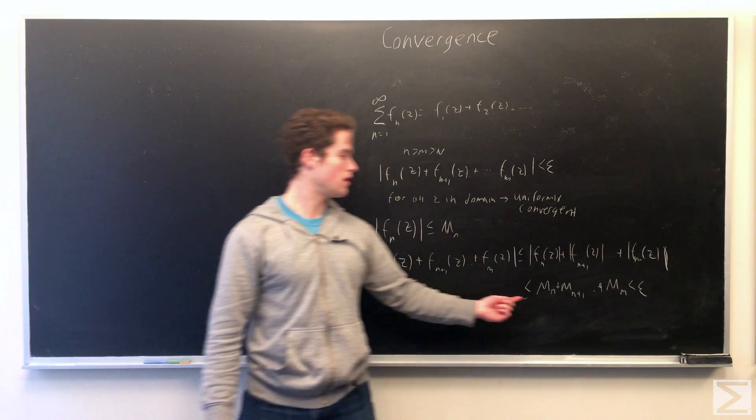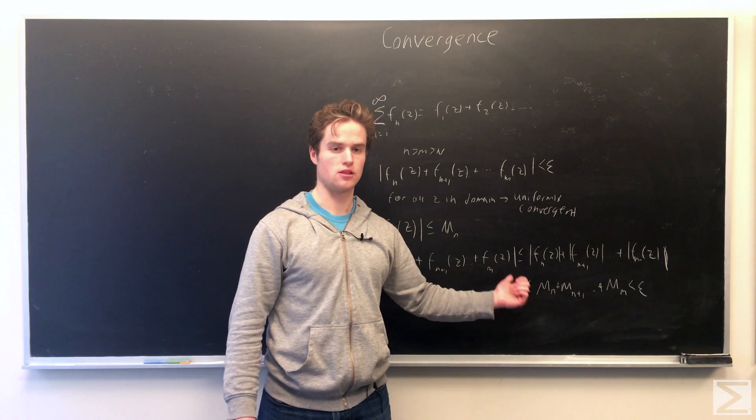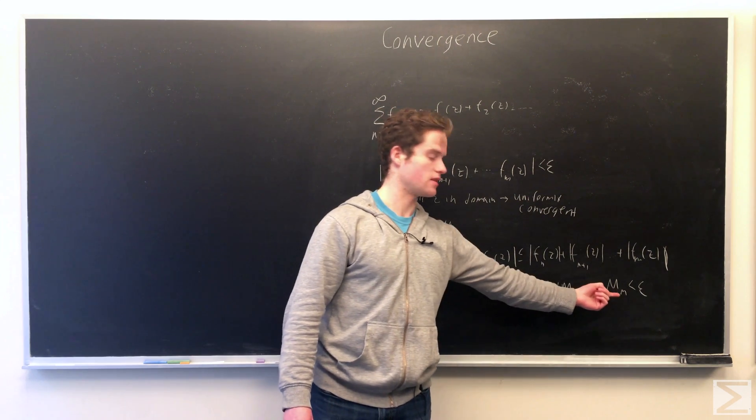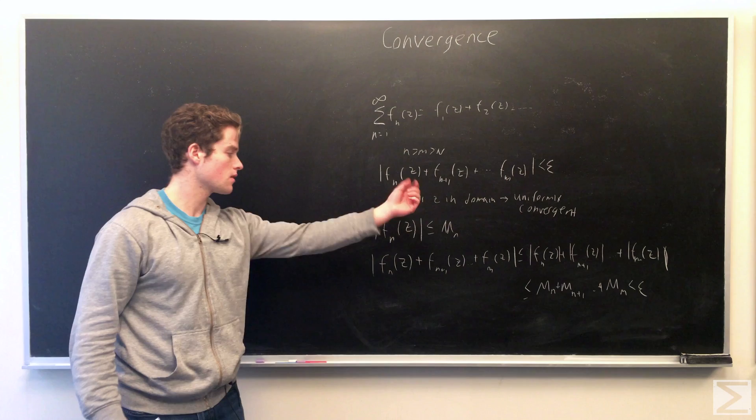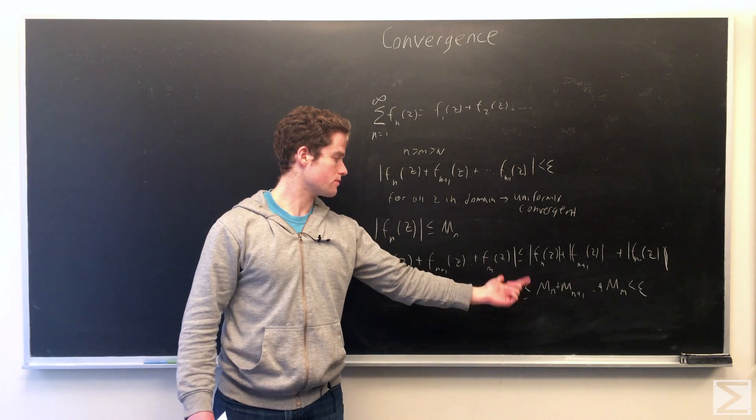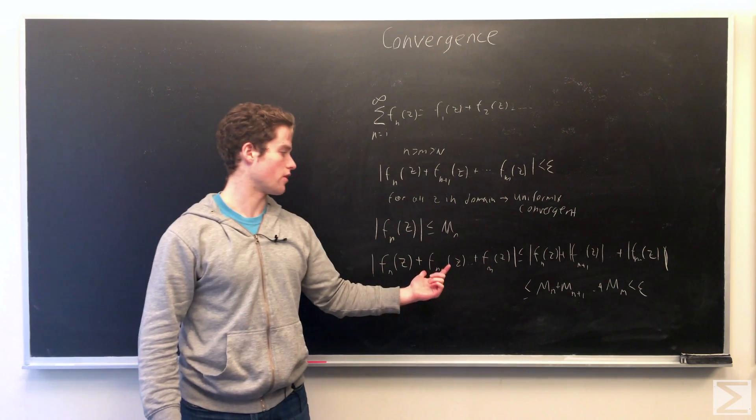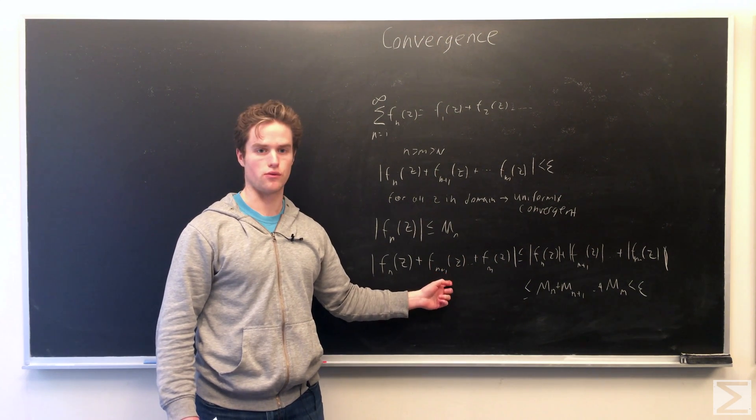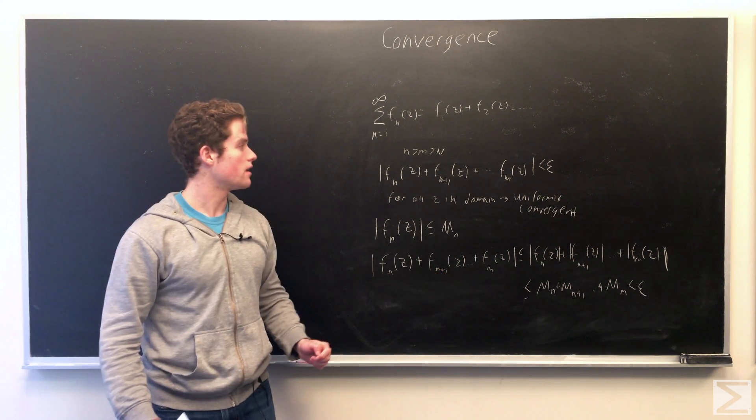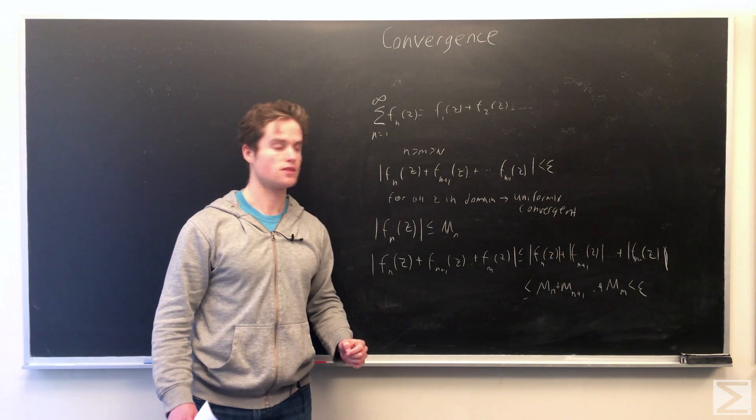And because we're assuming this series is a convergent series, it satisfies Cauchy's criteria. So for N, M greater than some big N, these are less than epsilon, any real number greater than zero, as small as we want. And so this is true for any z in our domain, so we can conclude this is uniformly convergent. And that's Weierstrass M test, which is an important test.